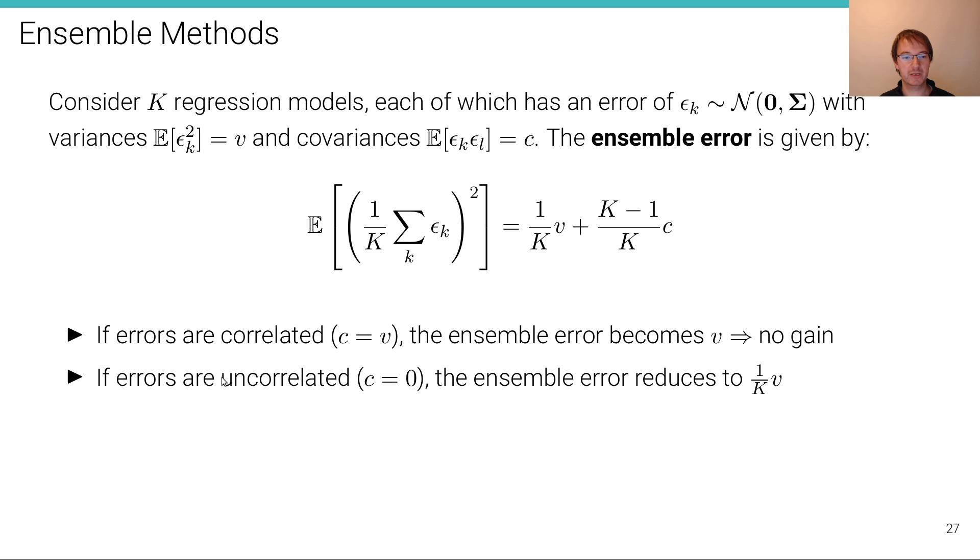However, if the errors are uncorrelated, so if c equals zero, the ensemble error reduces to one over k times v. So in this case, we have a huge gain. We have reduced the ensemble error significantly. Therefore, the ensemble is maximally effective if these errors are maximally uncorrelated.